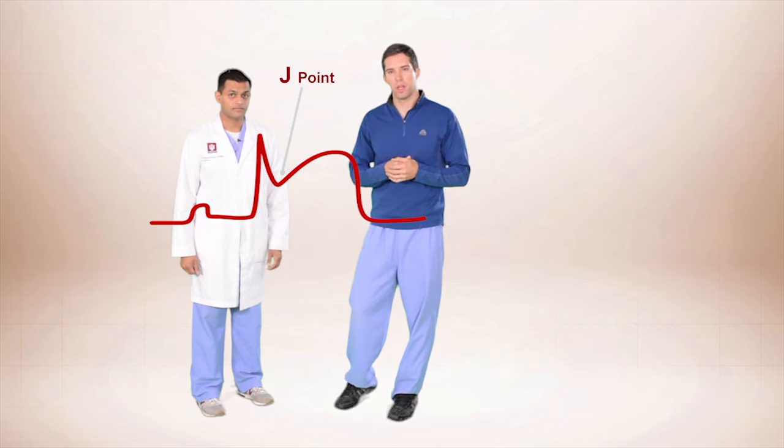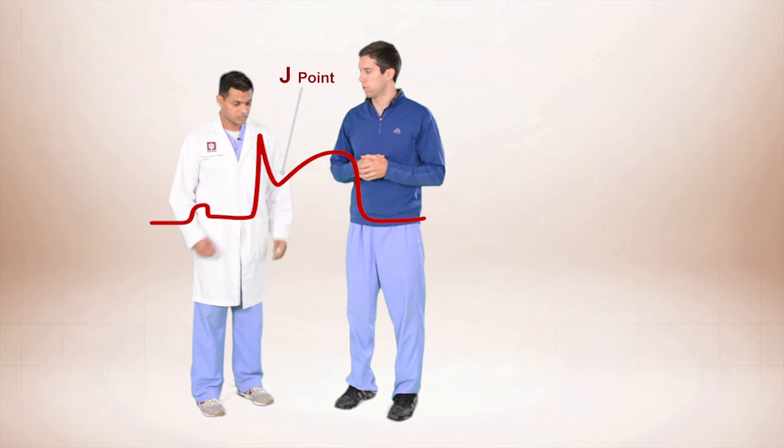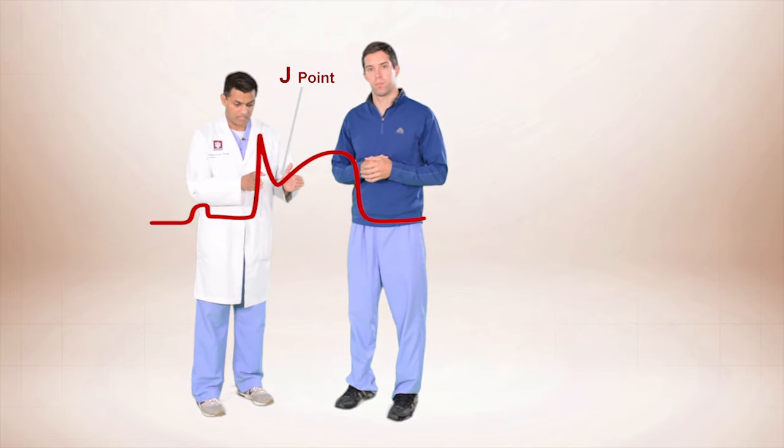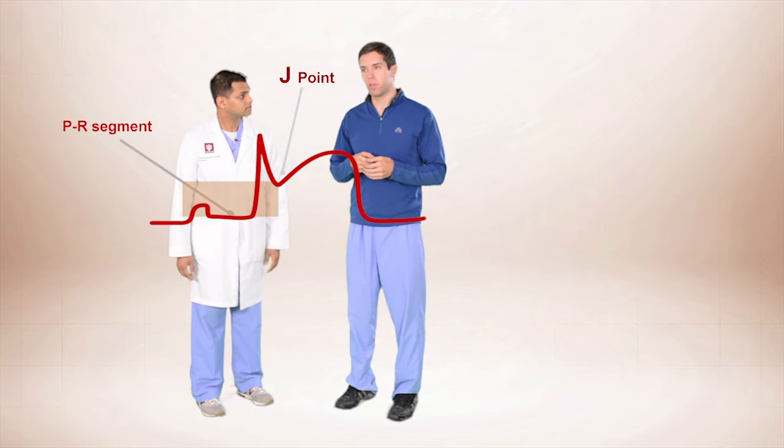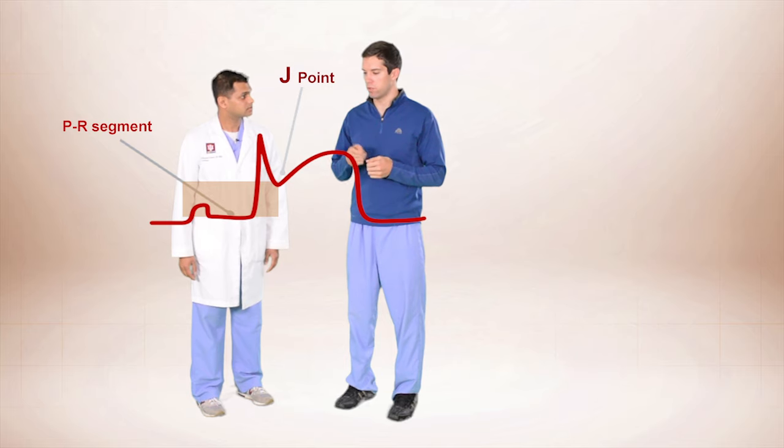And what are we comparing the J point to? So if the J point is here, we're going to compare the PR segment as our baseline, which is right here. So one millimeter or more of ST elevation at the J point compared to the PR segment.